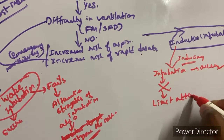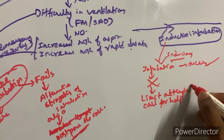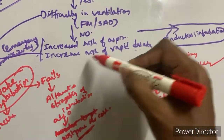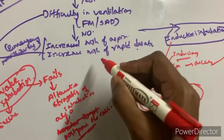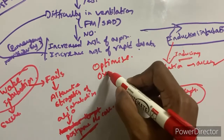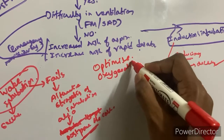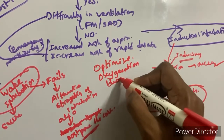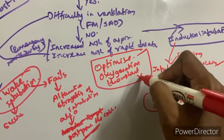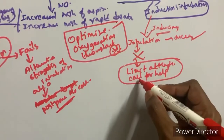Limit the attempts at intubation and call for help. Throughout both scenarios — whether awake intubation fails or post-induction intubation fails — the most important step is to optimize oxygenation using nasal oxygen at 15 liters per minute throughout the entire procedure.